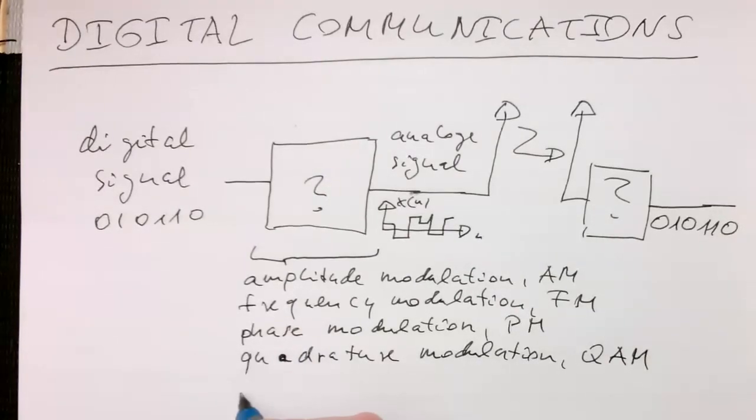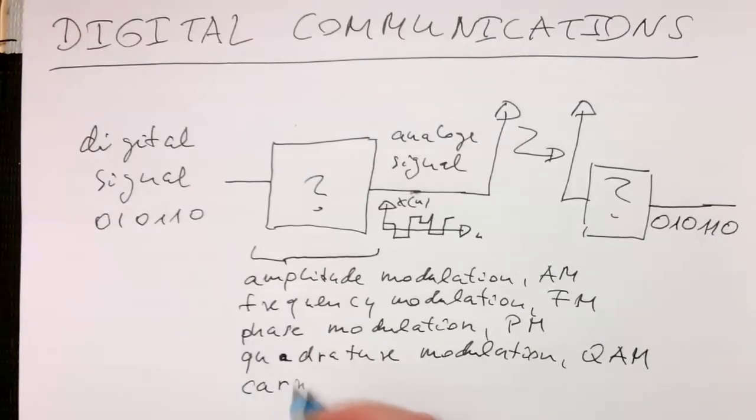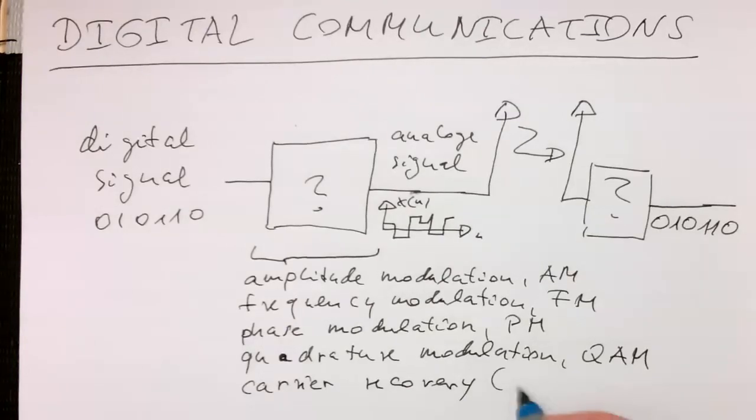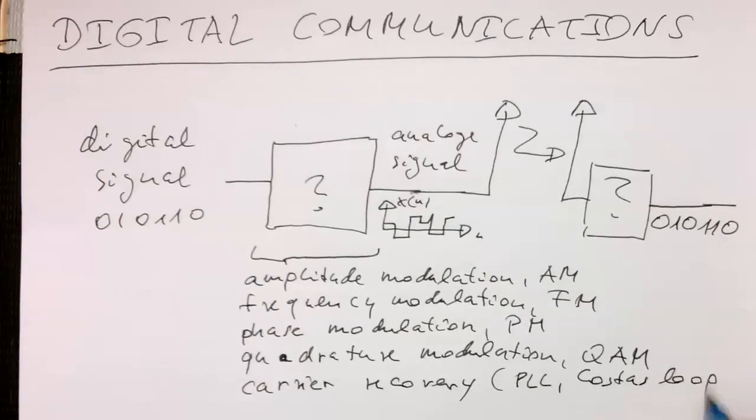Then what we need on the receiver is we need to recover the carrier. We do this for example with a PLL or with a Costas loop.